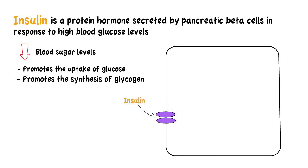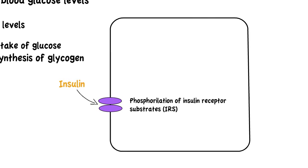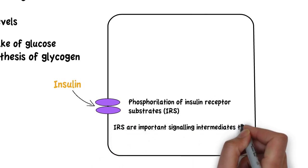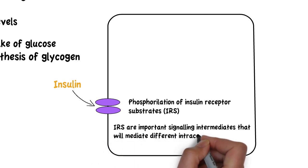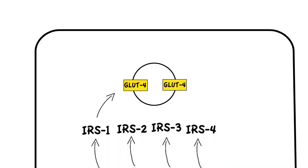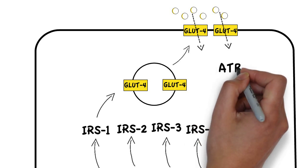Insulin binds to its receptor, a member of the tyrosine kinase receptor family, causing the phosphorylation of insulin receptor substrates. Insulin receptor substrates are important signaling intermediates that mediate different intracellular signaling pathways to bring about the actions of insulin, one of which is the translocation of GLUT4 glucose transporters from intracellular vesicles to the cell membrane. These transporters allow glucose to be taken into the cell and then metabolized for the production of ATP.